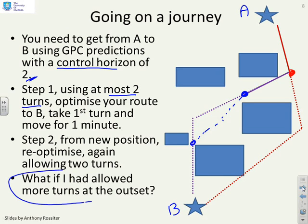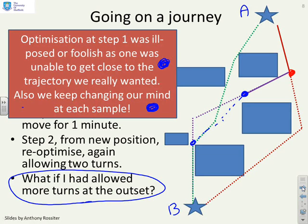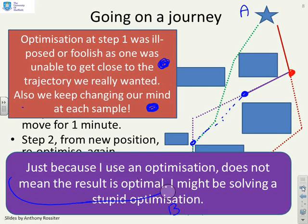Here's the key question: what if I'd allowed myself more turns in my planning at the outset? Then I would have probably ended up with a route like the green one, which is far, far shorter. The optimisation at the first step was what I call ill-posed — or foolish — as you were unable to get close to the trajectory you really wanted. You were unable to include the best route in the class of possible predictions because you needed more turns. Just because you use an optimisation does not mean the result is optimal, because you might be solving a stupid optimisation — one which really does not make sense.